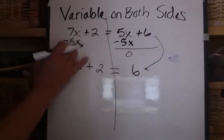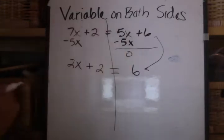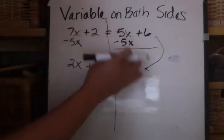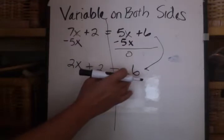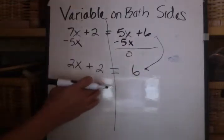Now, I could have also done something different where I subtracted 7x from both sides. That would be valid also. The reason I don't do that is if I have 5x minus 7x, I'd end up here with a negative 2x. And I'm trying to avoid negatives as much as possible.